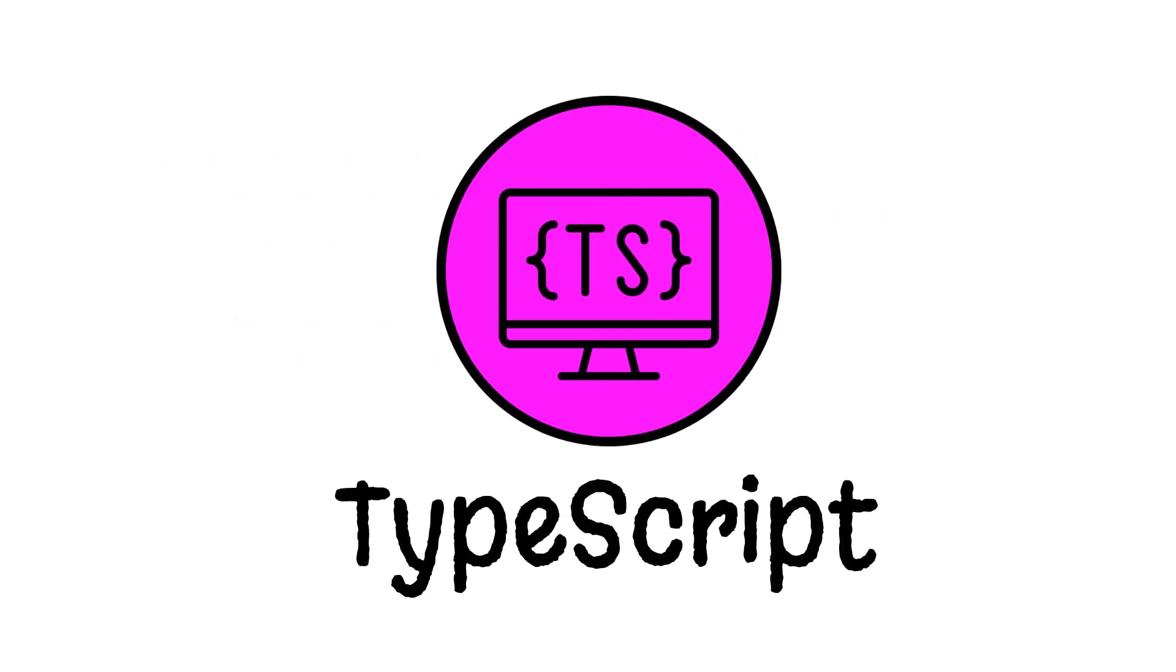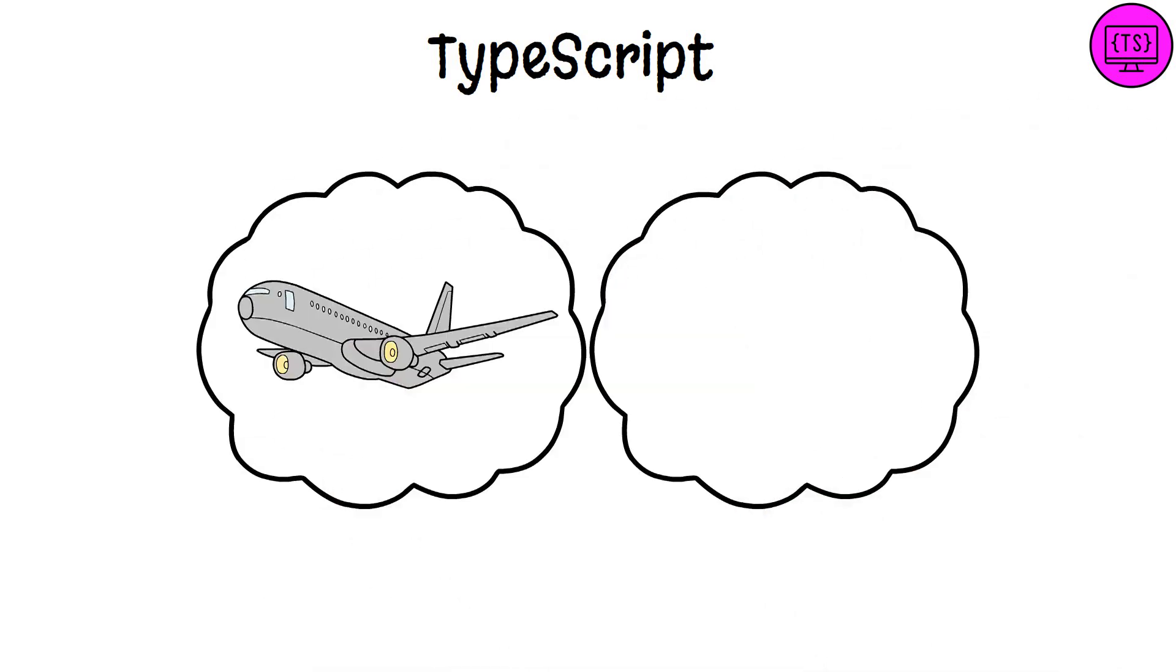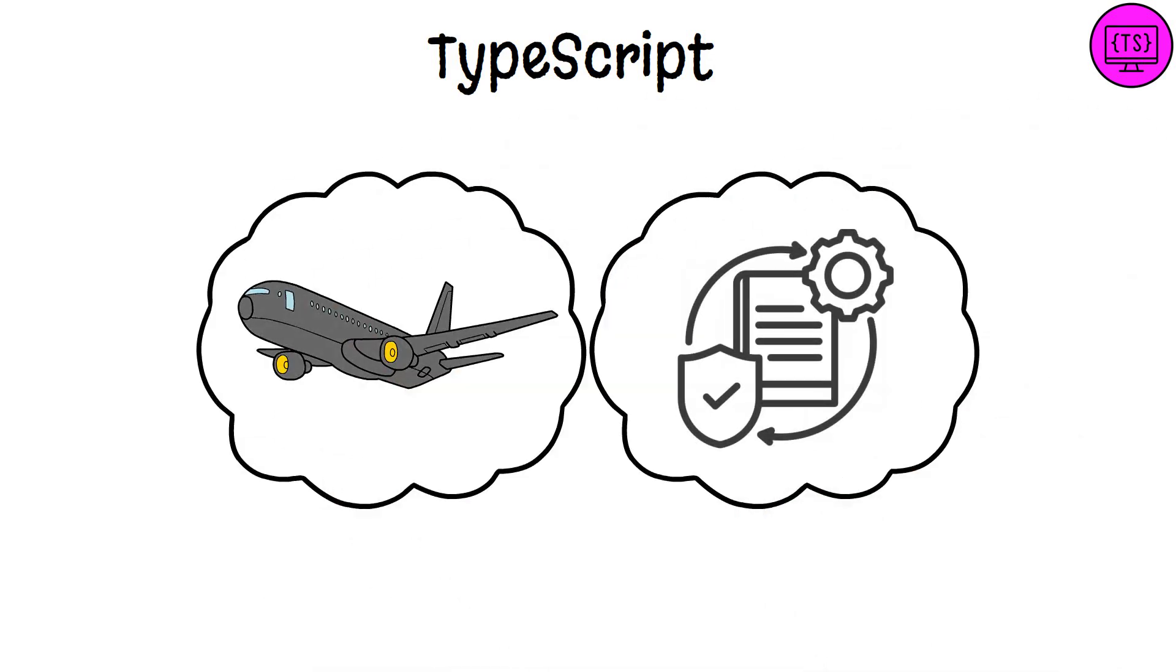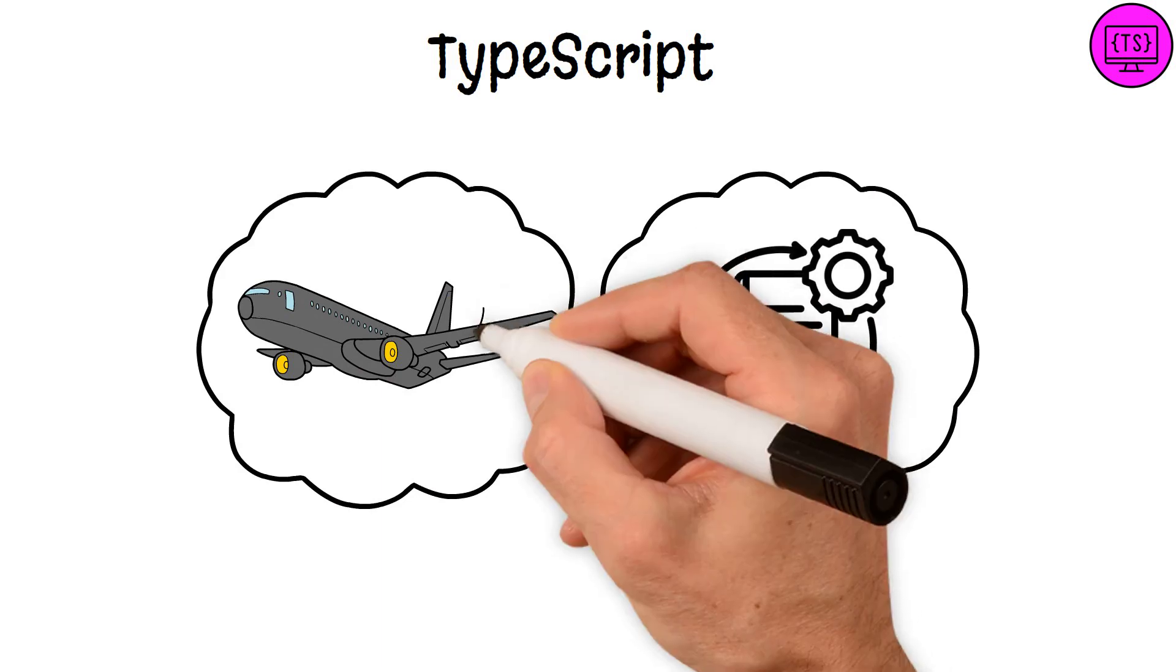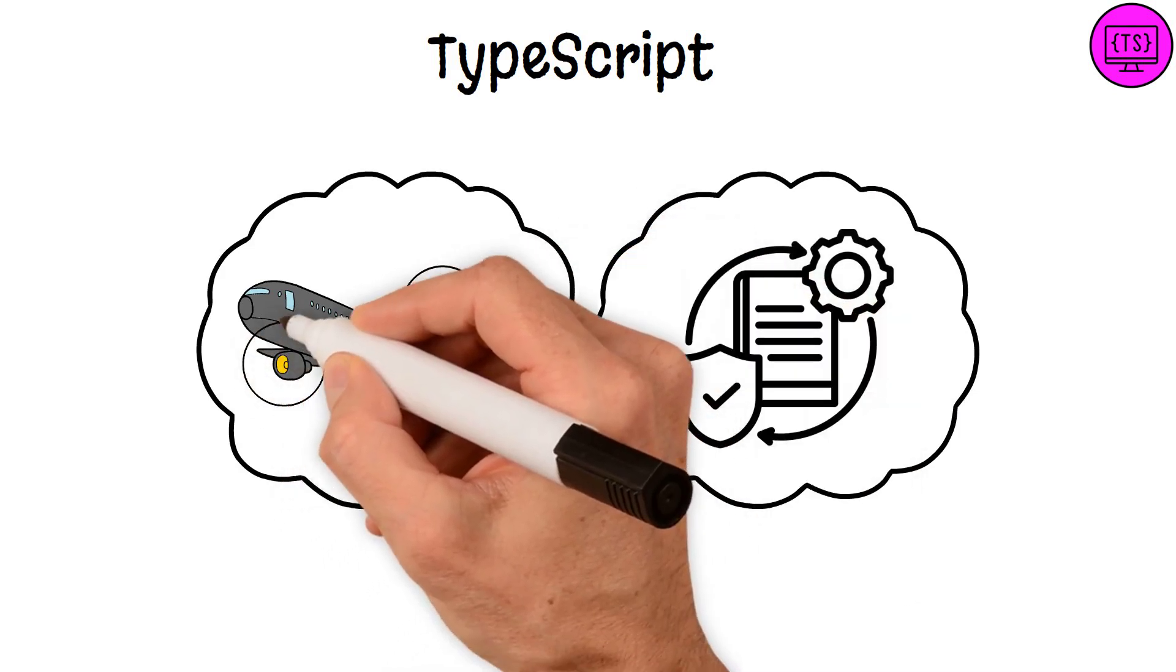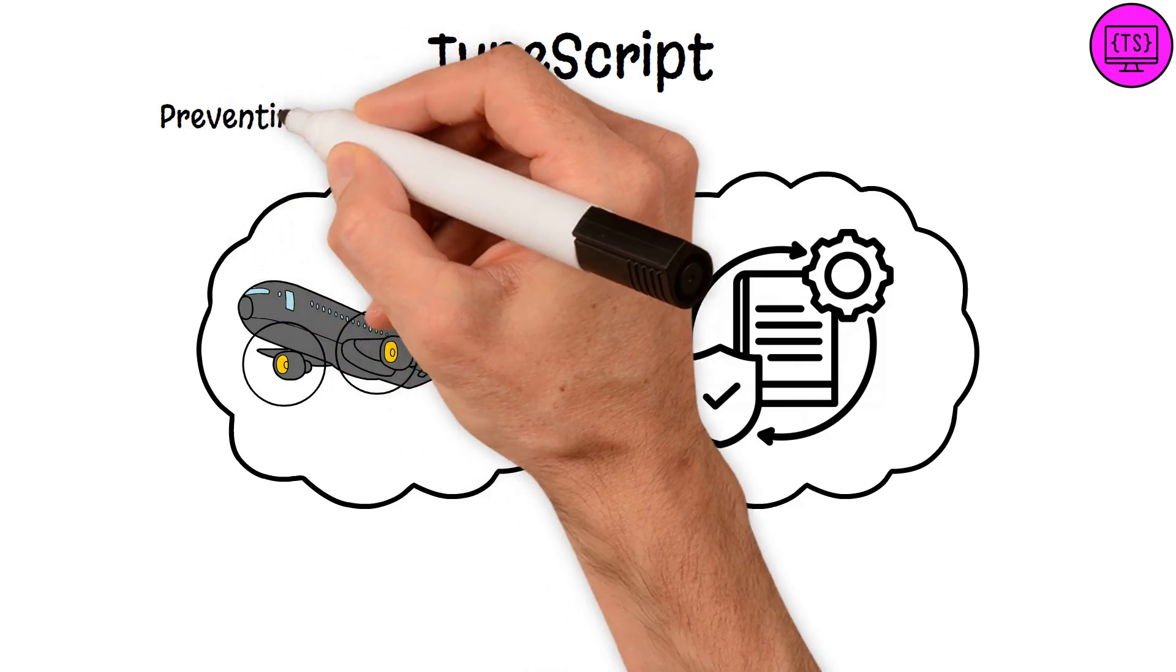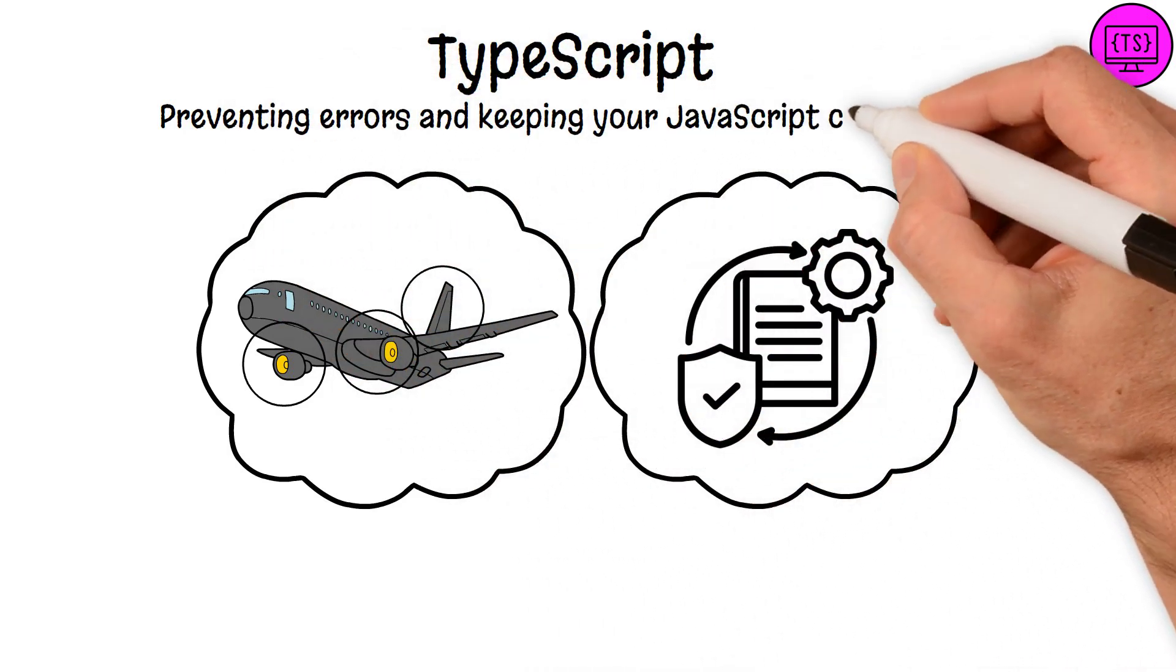TypeScript. Imagine building a model airplane where TypeScript acts as the instruction manual that highlights mistakes before they happen. It ensures that every part fits perfectly as you build, preventing errors and keeping your JavaScript code clean.